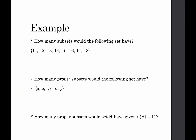Now we can figure this out without listing. How many subsets would the following set have? We count the elements: 1, 2, 3, 4, 5, 6, 7, 8. The cardinal number of the set is eight. So the number of subsets would be two to the n, which in this case is two to the eighth, and two to the eighth is 256.